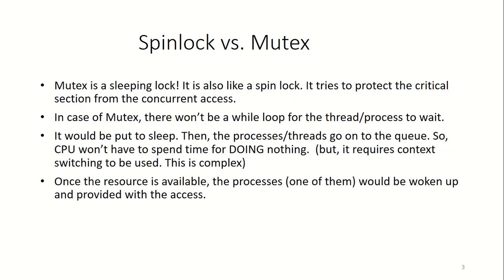Now, what is the difference between spin lock and mutex? They might look similar — mutex is also a lock — but mutex is a sleeping lock, that's the difference. It is similar to spin lock in that it protects the critical section from concurrent access, but in the case of mutex we are not going to use any while loop or let the process wait indefinitely.